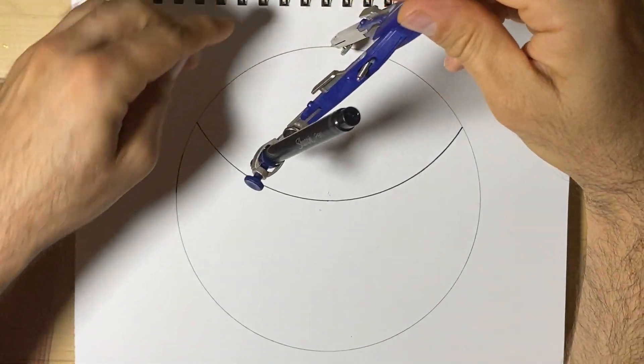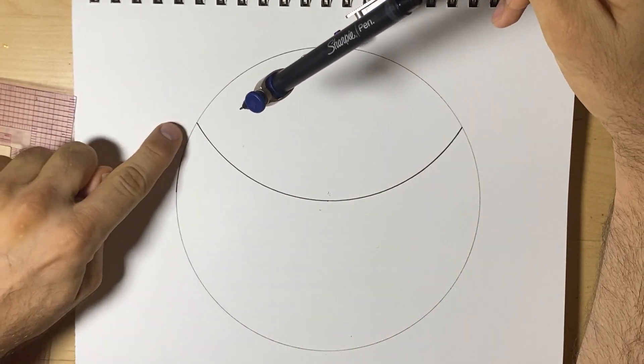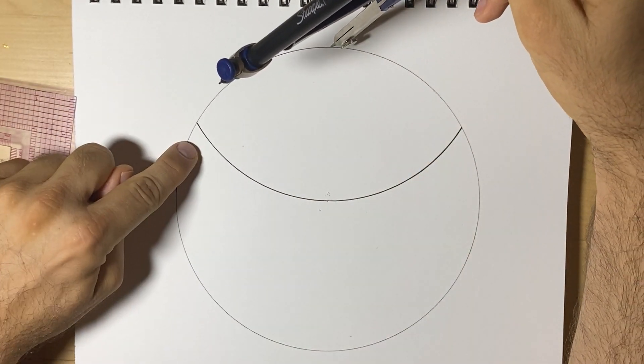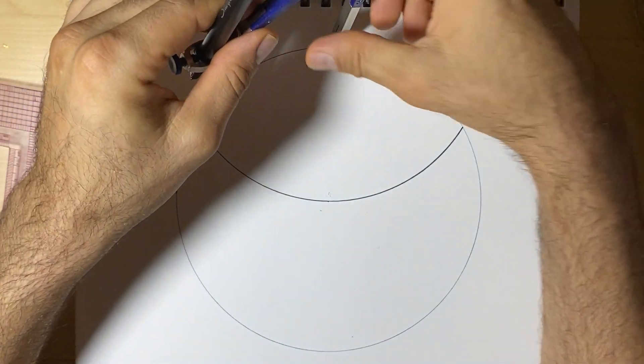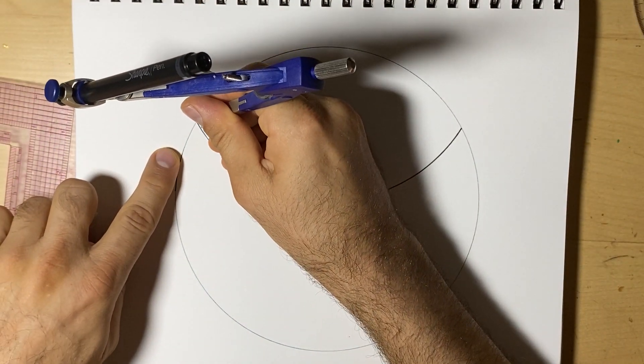And where the circle we started with meets the new edges, we're going to put our compass. Now, I like to go to the left and sort of follow it along. So here's to the left.